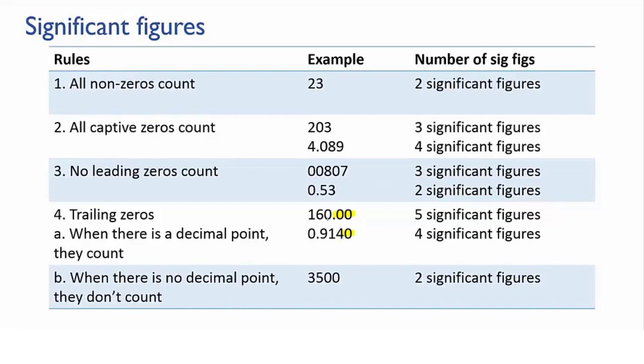So 160.00 has five significant figures, because all of those zeros were actually measured. And 0.9140 has four significant figures. Remember, the leading zero is not significant.